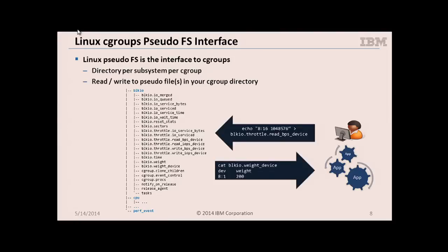This is the way that you interface with cgroups. There are particular files to allow you to set, for example, how many IOPS per second a particular cgroup can use. Likewise, you can cat a file and get the amount of block I/Os done, or the amount of bytes written, et cetera.